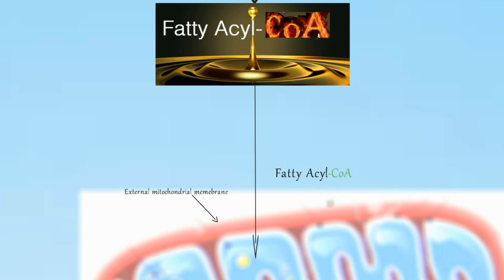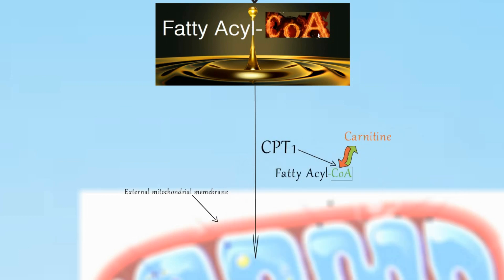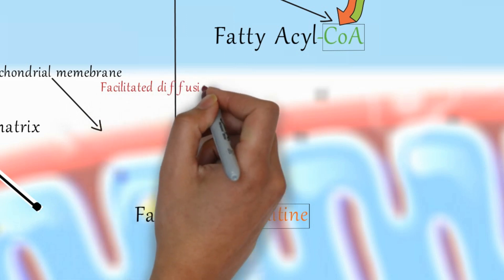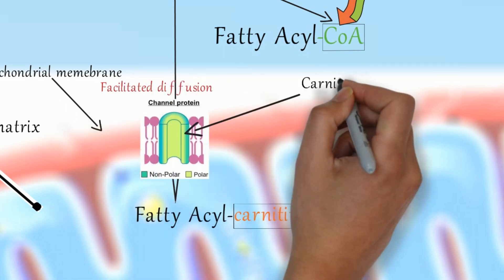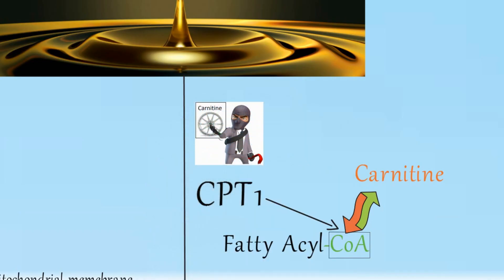Fatty acyl CoA in the cytosol exchanges its CoA for carnitine by the action of the enzyme CPT1, forming a fatty acyl-carnitine conjugate. This complex then enters the mitochondrial matrix by facilitated diffusion via carnitine acyl-carnitine translocase. Picture CPT1 as the driver thief who takes CoA from fatty acyl CoA and replaces it with carnitine.